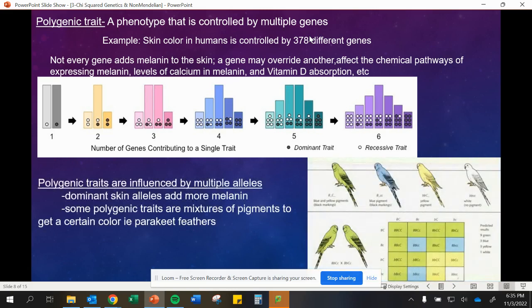Other organisms also have this too. Polygenic traits are going to be influenced by multiple alleles. Here we have different colorations in birds. They're going to be a mixture giving us those different parakeet colorations and colors.